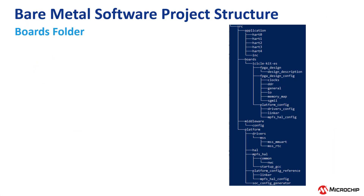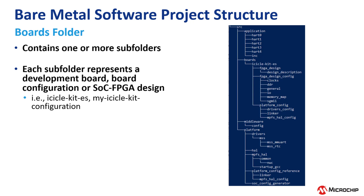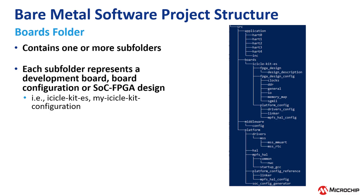As mentioned previously, the Boards folder can contain one or more subfolders. Each subfolder represents a Development Board, a Project Configuration, or an SOC FPGA design. For example, on the right-hand side, you can see there is an IcicleKit ES folder, which represents the default IcicleKit Development Board configuration.